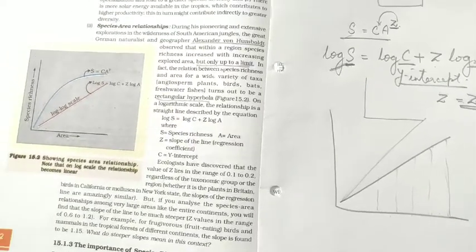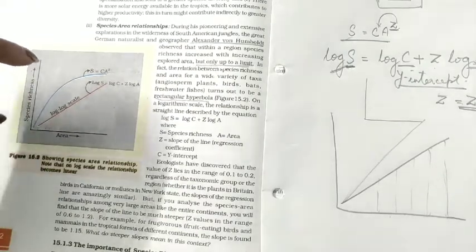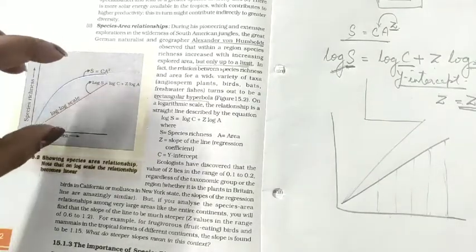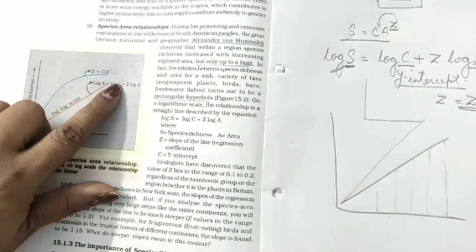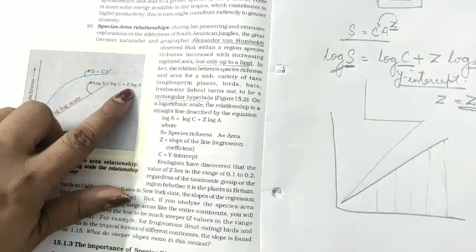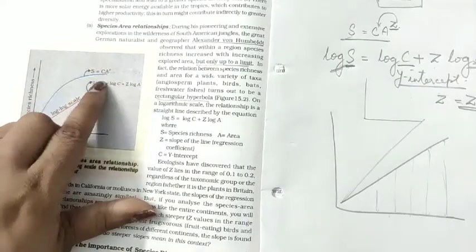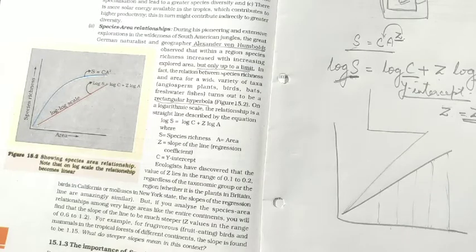So it is all about species-area relationship, in which the x-axis is area and the y-axis is species richness. Alexander von Humboldt's observation, represented graphically, gives a hyperbolic equation. When converted to logarithmic scale it becomes linear: S is species richness, C is the y-intercept constant, and Z is the slope of the line and regression coefficient. In exam questions, Z and C values will be given and you need to calculate S. This is the pattern of biodiversity based on species-area relationship. Thank you.